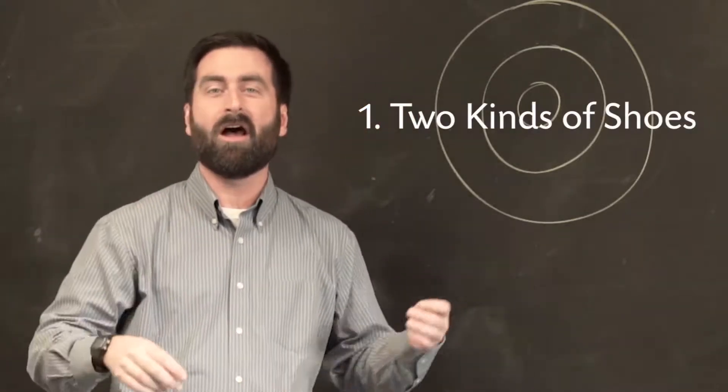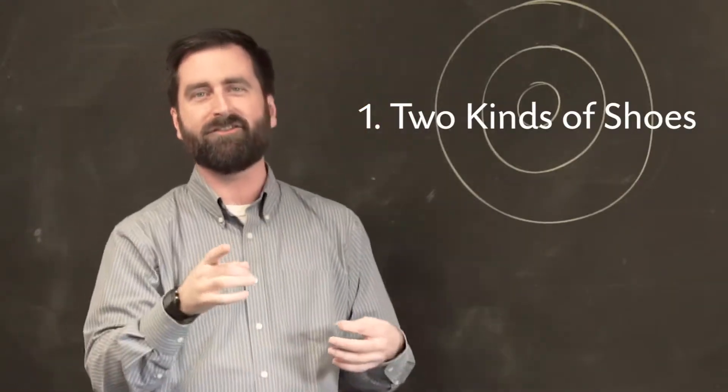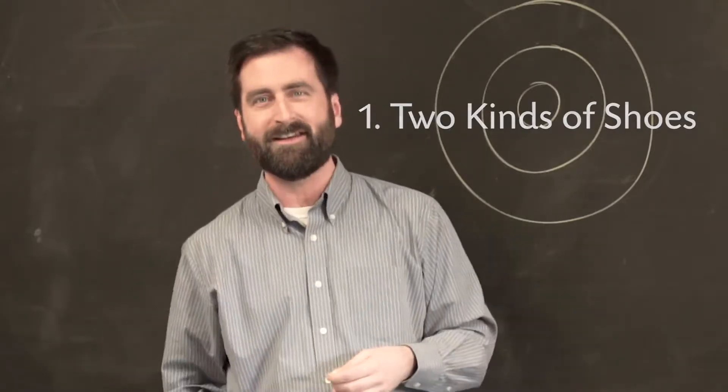You need to know number one: every curler has two different types of shoes on. On one shoe they've got a normal sole, on the other shoe they've got Teflon on the bottom so that they can slide very easily.